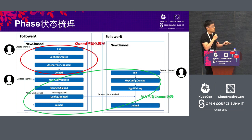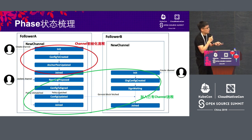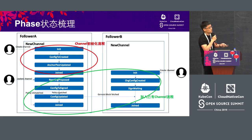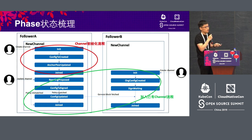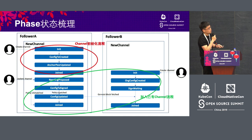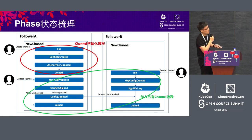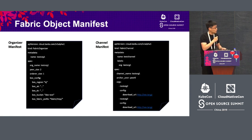The second typical process is establishing a new channel. First, we need to define the configuration of the channel target and then add follower A to the channel. If follower B also wants to join the channel, the administrator needs to apply a request and establish the related channel resources. But it needs to follow the signature of follower A, then submit the organization description. Follower B provides this to the administrator of follower A. After adding the organizations, they do the signature. After the signature you will find the channel has been established, and then you will be able to deploy the chaincode.